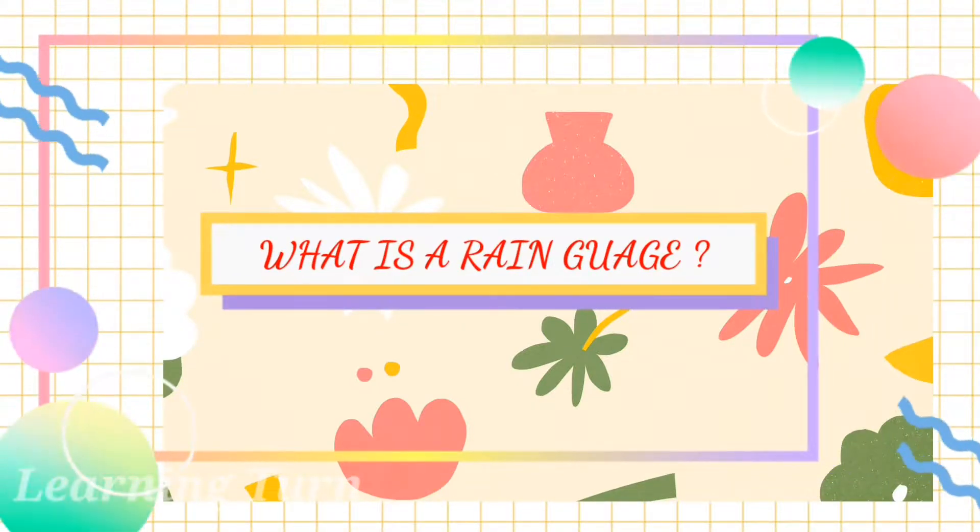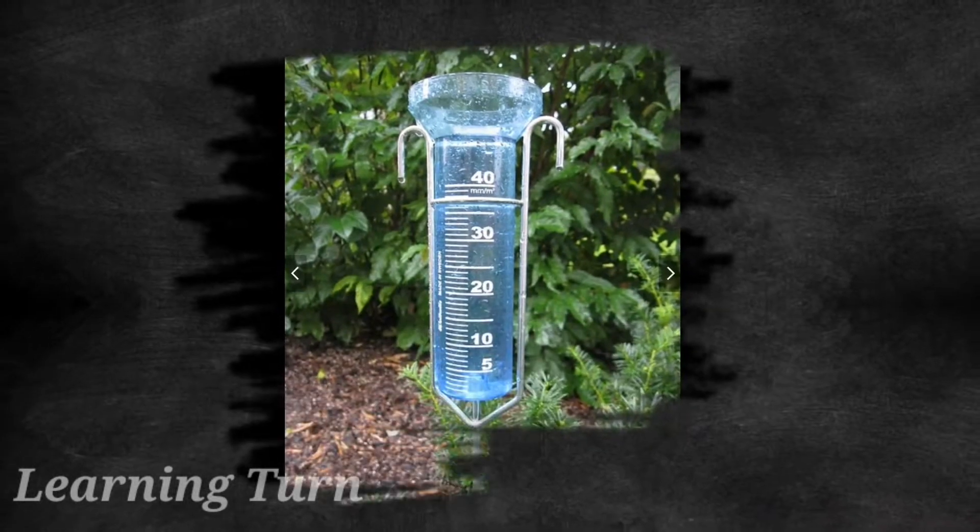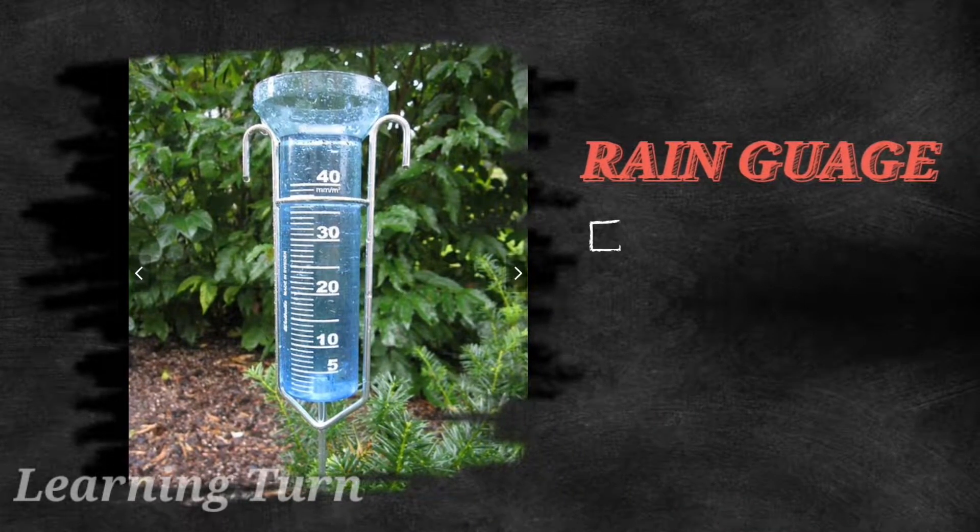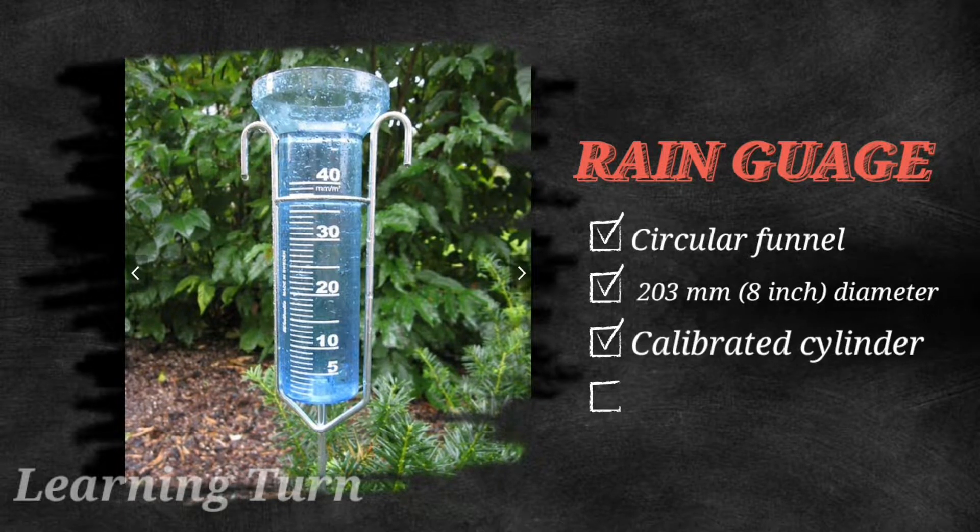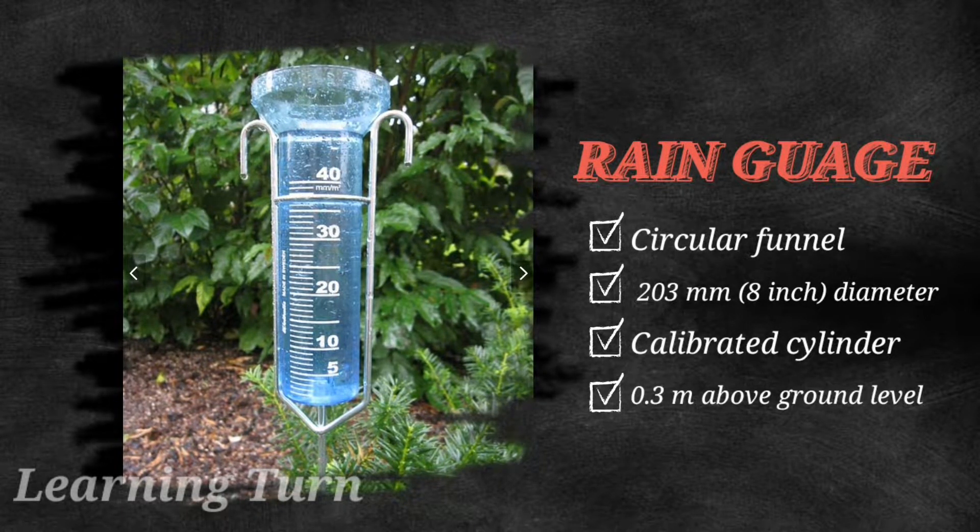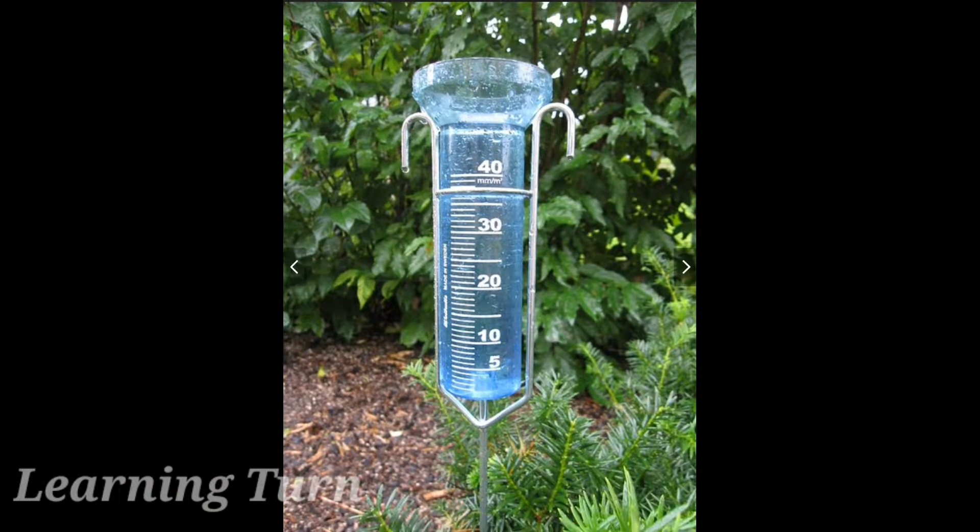What is a rain gauge? The standard instrument for the measurement of rainfall is the 8-inch rain gauge. This is essentially a circular funnel with a diameter of 2 or 3 millimeters which collects the rain into a calibrated cylinder. The top of the rain gauge is 0.3 meters above the ground.